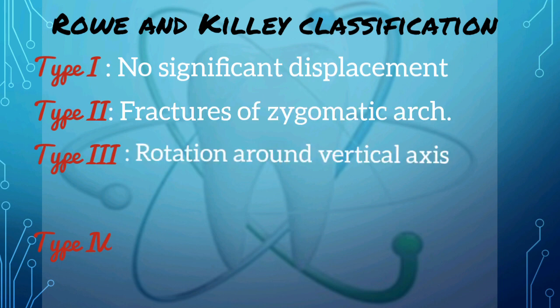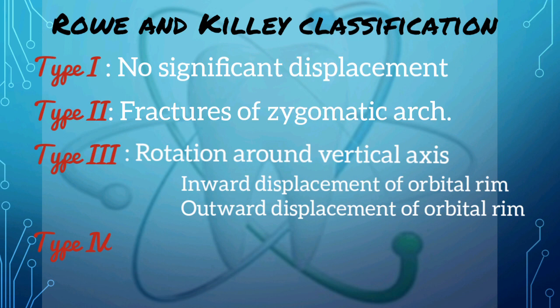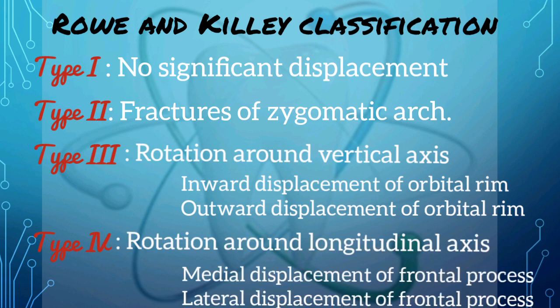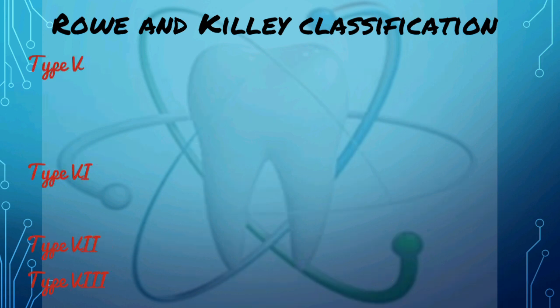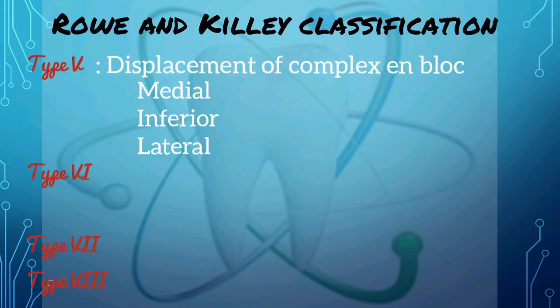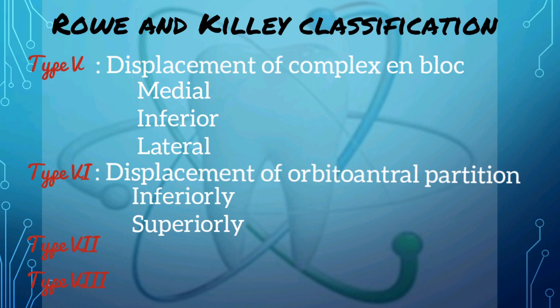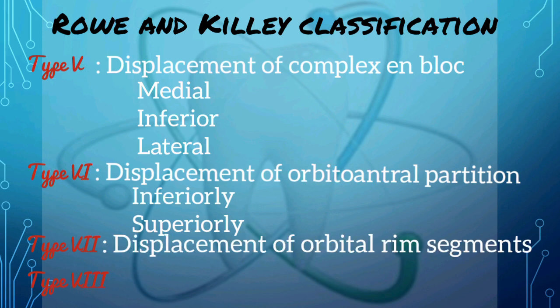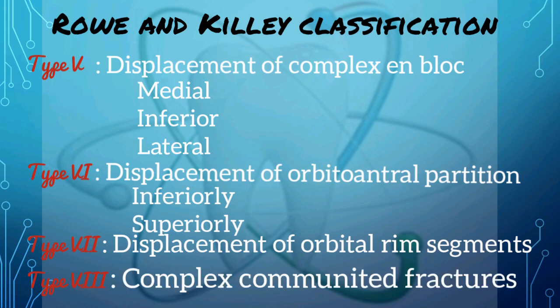Type 3 includes rotation around the vertical axis. Type 4 denotes rotation around the longitudinal axis. Type 5 includes displacement of the complex en bloc. Type 6 includes displacement of the orbito-antral partition. Type 7 includes displacement of the orbital rim segments. Type 8 includes the complex comminuted fractures.